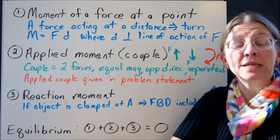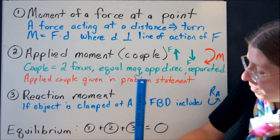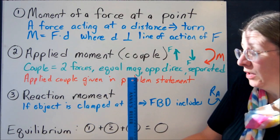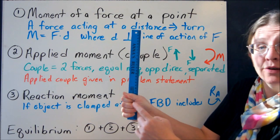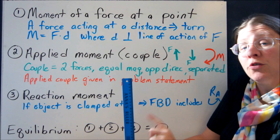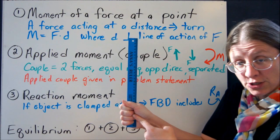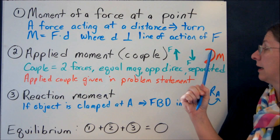The third way you'll see the word moment is to have a reaction moment. So if you have your mailbox that's stuck in the ground, that clamp down here at the bottom keeps this from rotating no matter what you do to it. So when you draw the free body diagram, you have to put your own reaction moment down here.